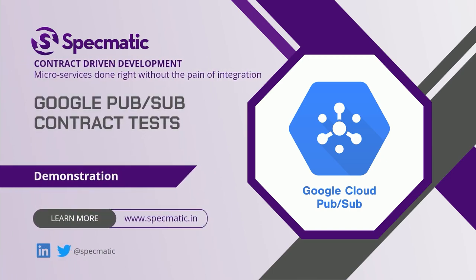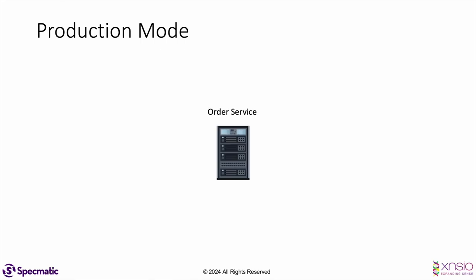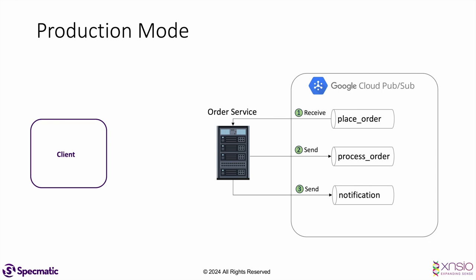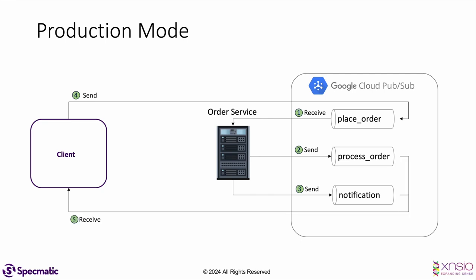In this video we'll see how to run contract tests against a service which talks to a Google Pub/Sub instance. Let's say we have an order service which talks to a Google Pub/Sub instance. The order service listens to messages on the place order topic, and for every message it receives, it sends one message on the process order topic and one message on the notification topic. A client of this service would send a message on the place order topic and receive messages on the process order and notification topics.